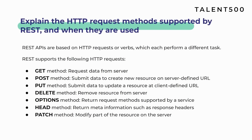PUT has a similar ability to POST but with a key difference — it is used to update a resource at a client-defined URL. DELETE method is used to remove a resource from the server. OPTIONS method is used to return the request methods supported by a service. HEAD method is used to return meta information such as response headers — for example, image metadata like dimensions, size, and name. PATCH method is used to modify part of the resource on the server.